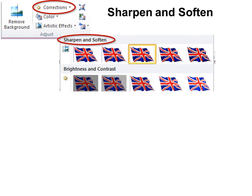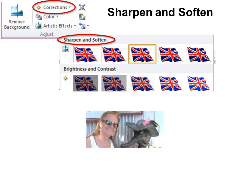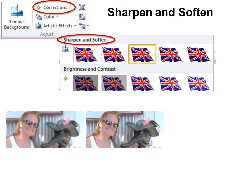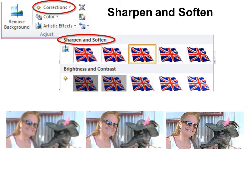The next one is Sharpen and Soften. You can take a photo that's slightly out of focus and make it a little bit better. This is a photo with my phone camera. And you can see here I softened it on this side and I sharpened it on this side. So it actually looks like it's in focus more.